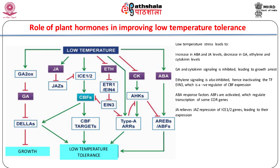JA and cytokinin signaling is inhibited, leading to growth arrest. Ethylene signaling is also inhibited, hence inactivating the transcription factor ethylene insensitive 3 (EIN3), which is a negative regulator of CBF expression. ABA response factors (ABFs) are activated, which regulate transcription of some core genes. JA relieves JAZ repression of ICE1 and ICE2 genes, leading to their expression.